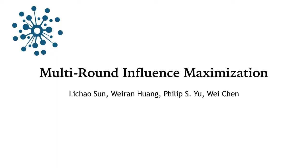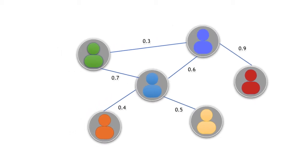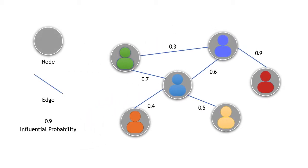Let's look at multi-round influence maximization. Here is a graph. In this graph, there are three main components: Node, Age, and Influential Probability. Influential Probability indicates the probability of a node to activate its neighbor.